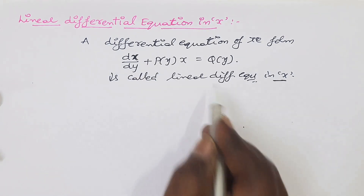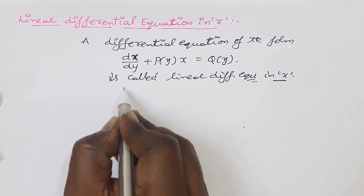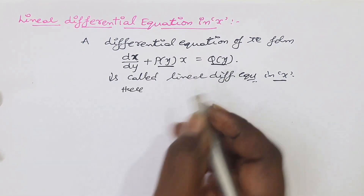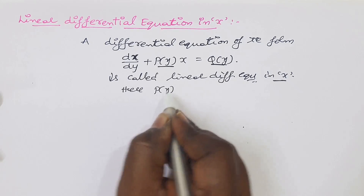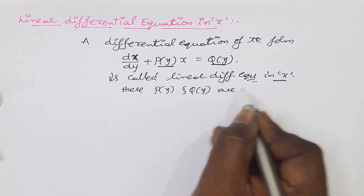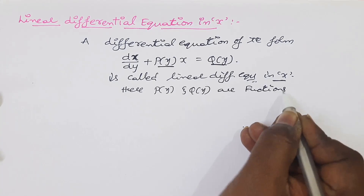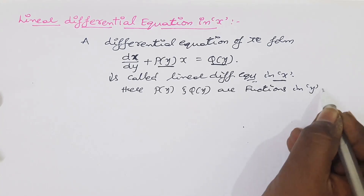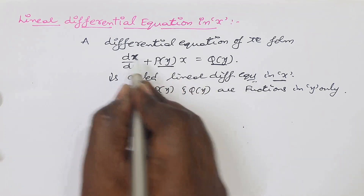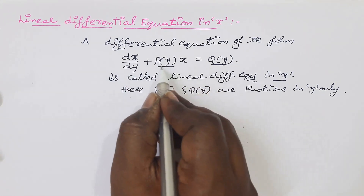So x is the dependent variable in a linear differential equation. P(y) and Q(y) are functions in y only. This is very easy — it is similar to what we have done with y, just now x is the dependent variable.